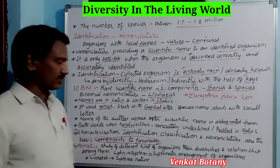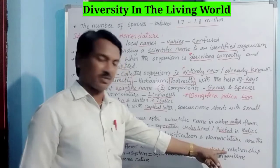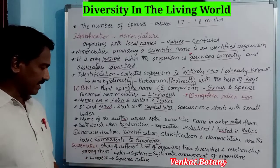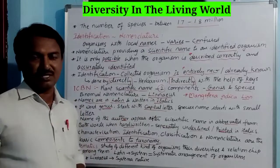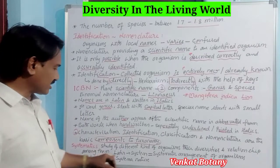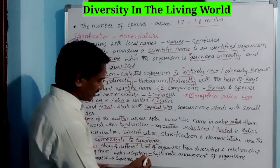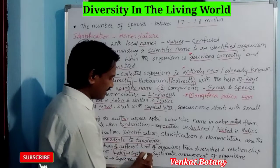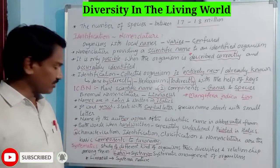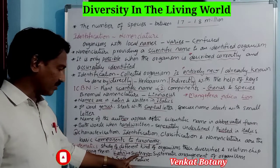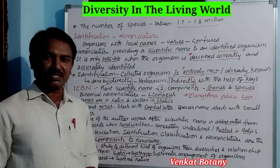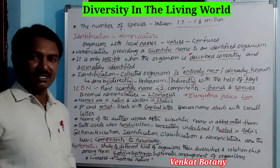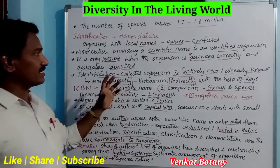The study of different kinds of organisms, their derivatives, and relationships among them is called systematics. Systematics is the systematic arrangement of organisms. The word comes from the Latin word 'systema,' meaning systematic arrangement of organisms. Linnaeus used the term systema in his publication Systema Naturae.